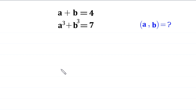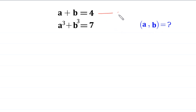Hello everyone, you are welcome to how to solve this very nice system of equations. a plus b is equal to 4 and a cubed plus b cubed is equal to 7. Our job is to find all possible values of a and b. Let us call this equation 1 and this equation 2.